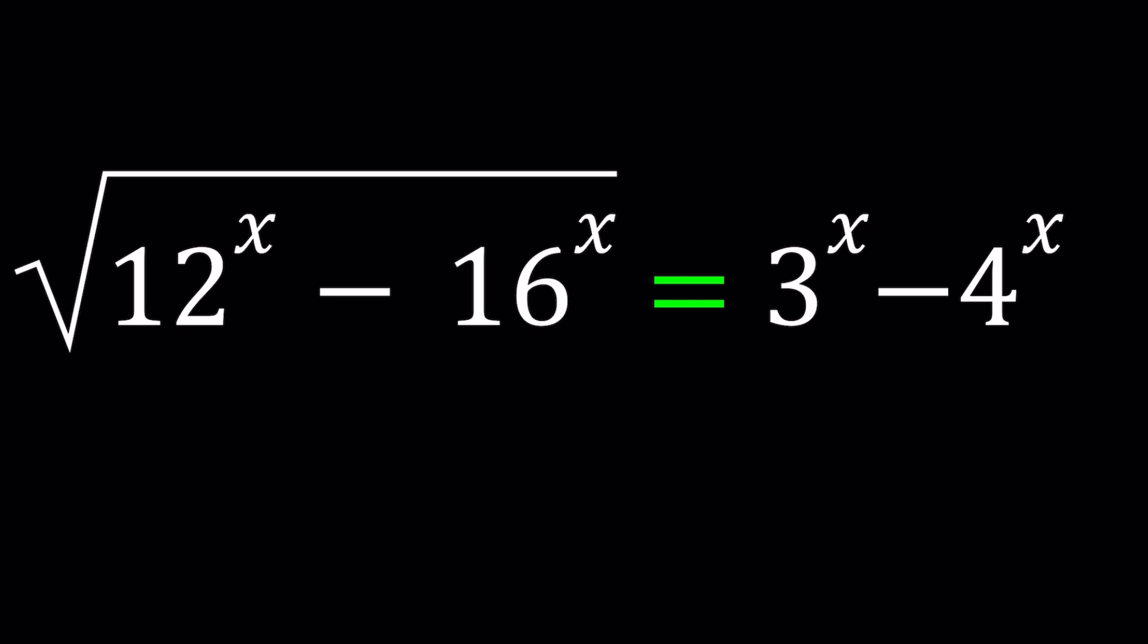Replace 2 to the power x with a and 3 to the power x with b. Now why am I picking on those two bases? If you look at these numbers, 12 and 16 and 3 and 4, you'll notice that 12 can be written as 2 to the second power times 3, and 16 is 2 to the fourth power. So both of these numbers are made up of 2's and 3's only in their prime factorization.